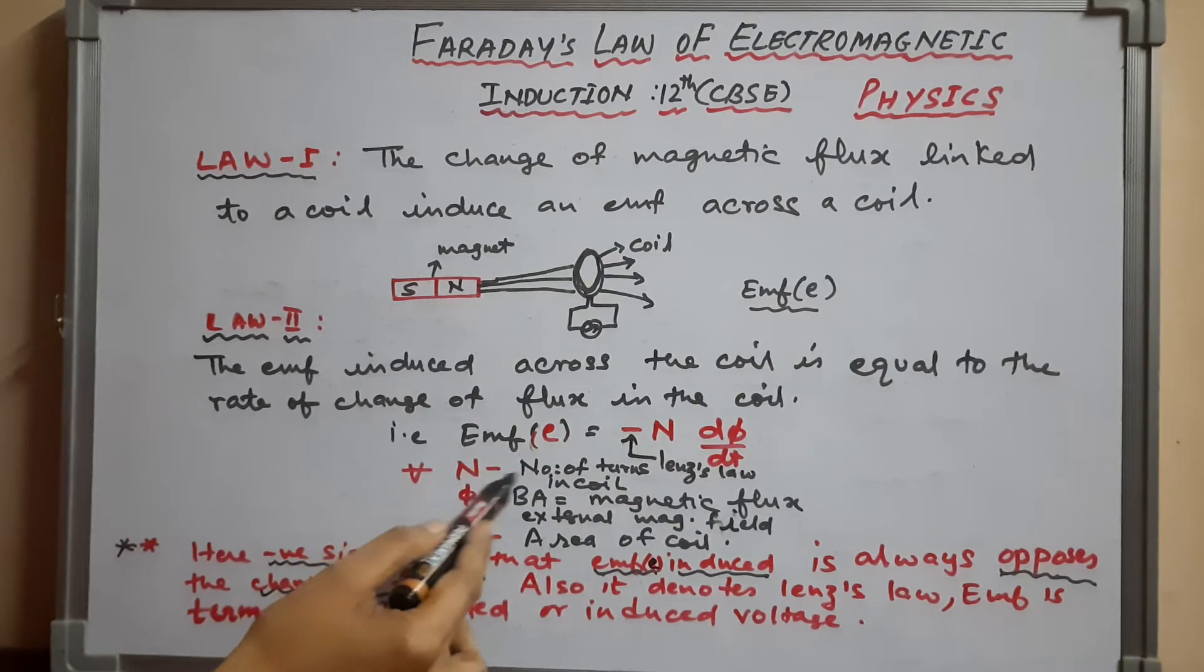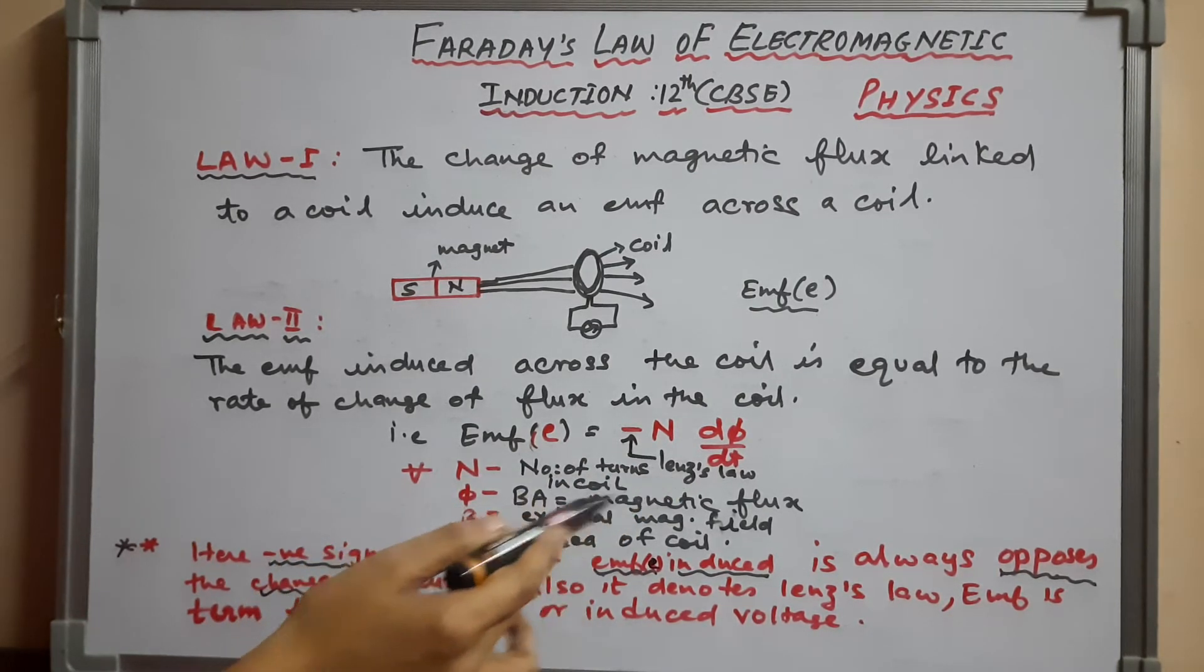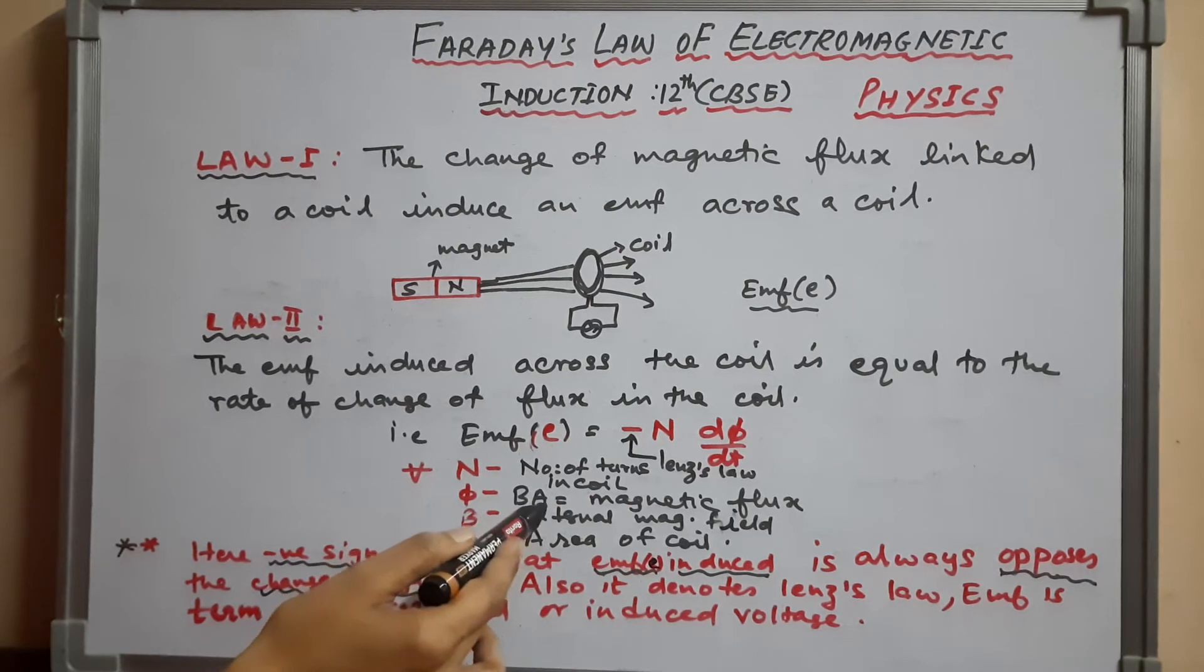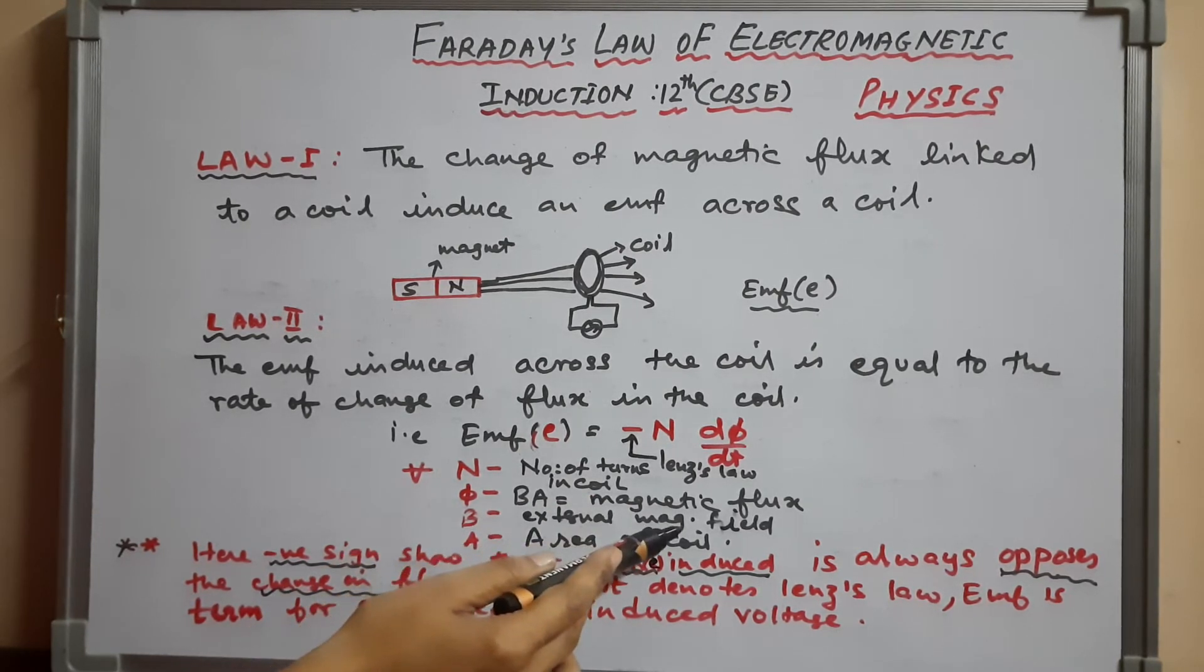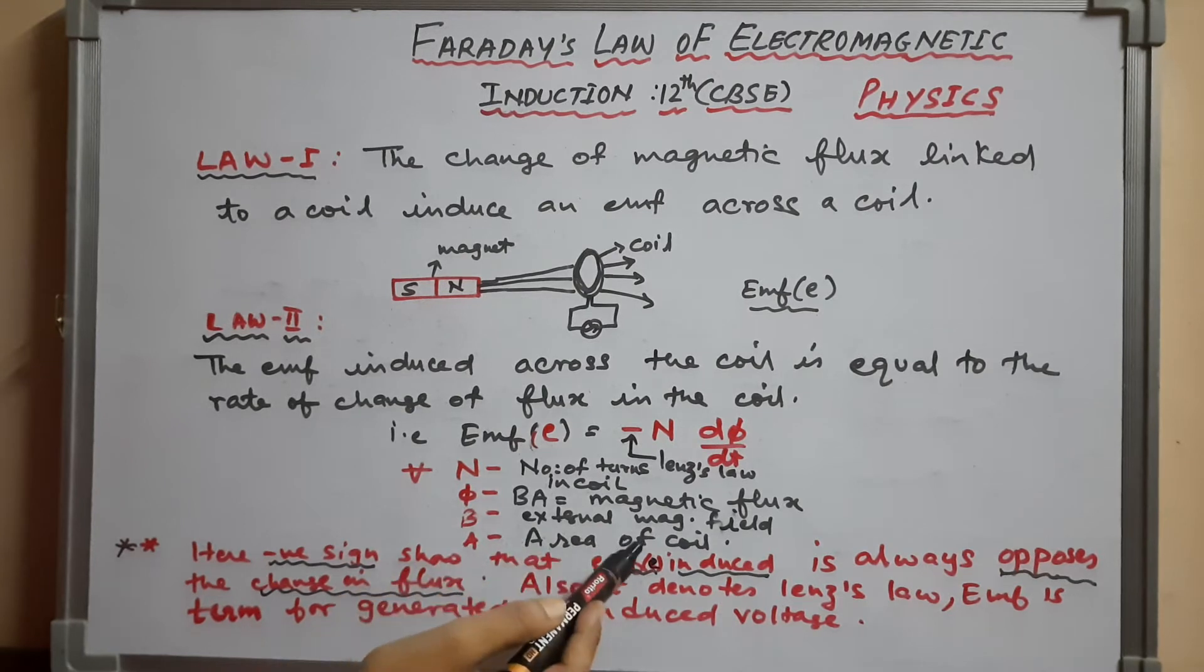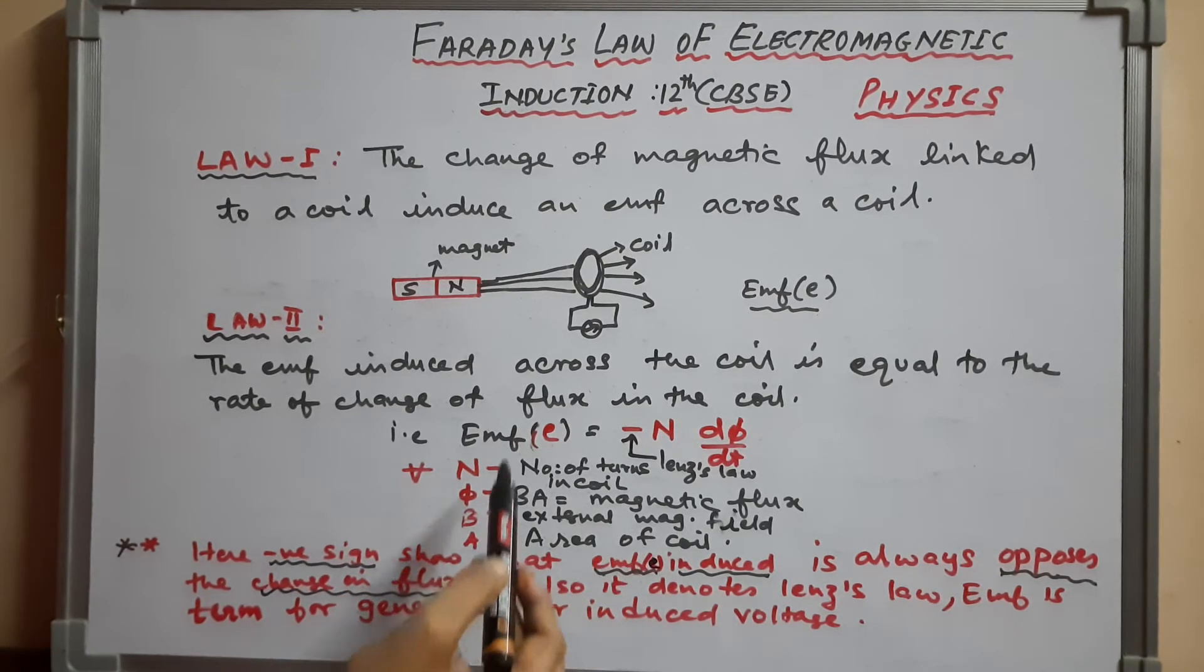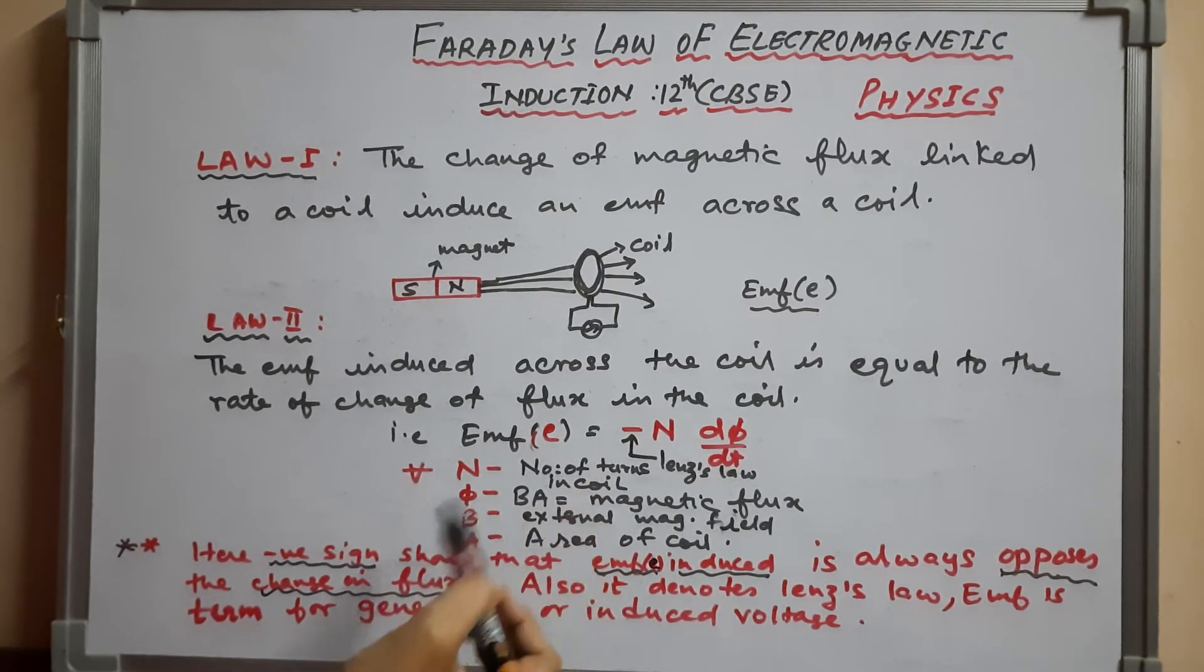N is the number of turns, φ is the magnetic flux equal to B·A, where B is the external magnetic field and A is the area of the coil.